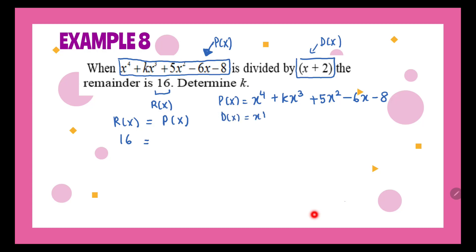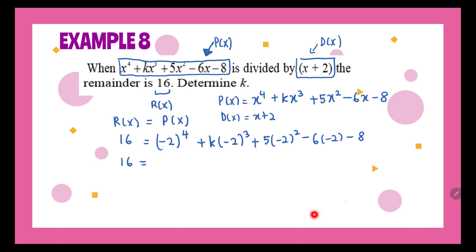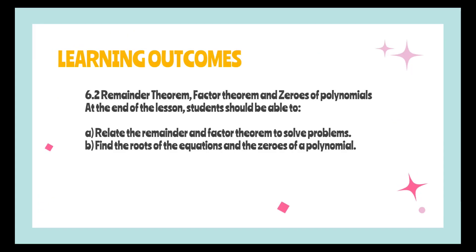Dividing by x + 2 means we substitute x = −2 into the polynomial. So: (−2)⁴ + k(−2)³ + 5(−2)² − 6(−2) − 8 = 16. This gives 16 − 8k + 20 + 12 − 8 = 16. Solving this, we get k = 3. This is how we use the remainder theorem to determine the value of k.